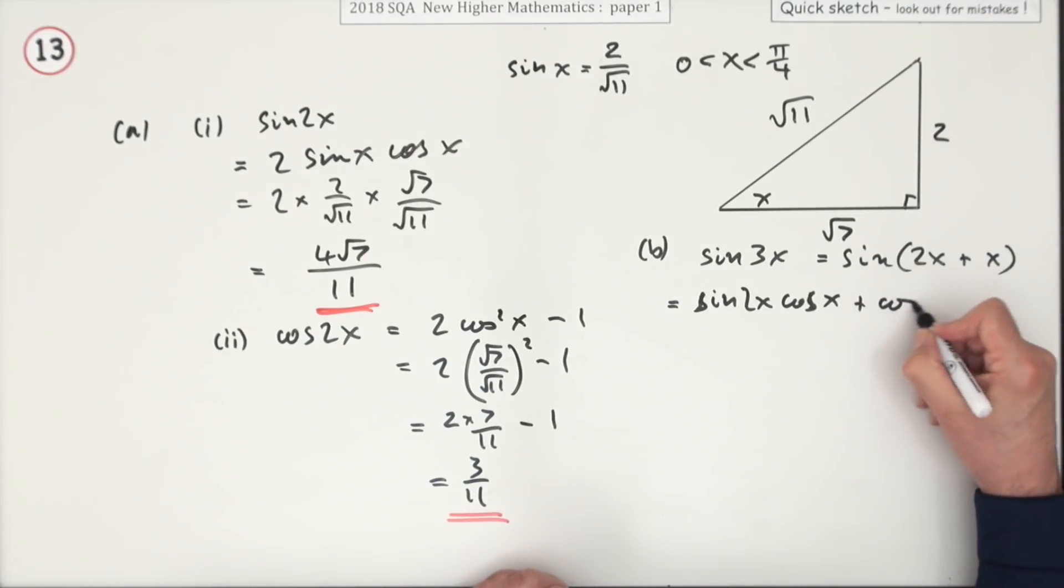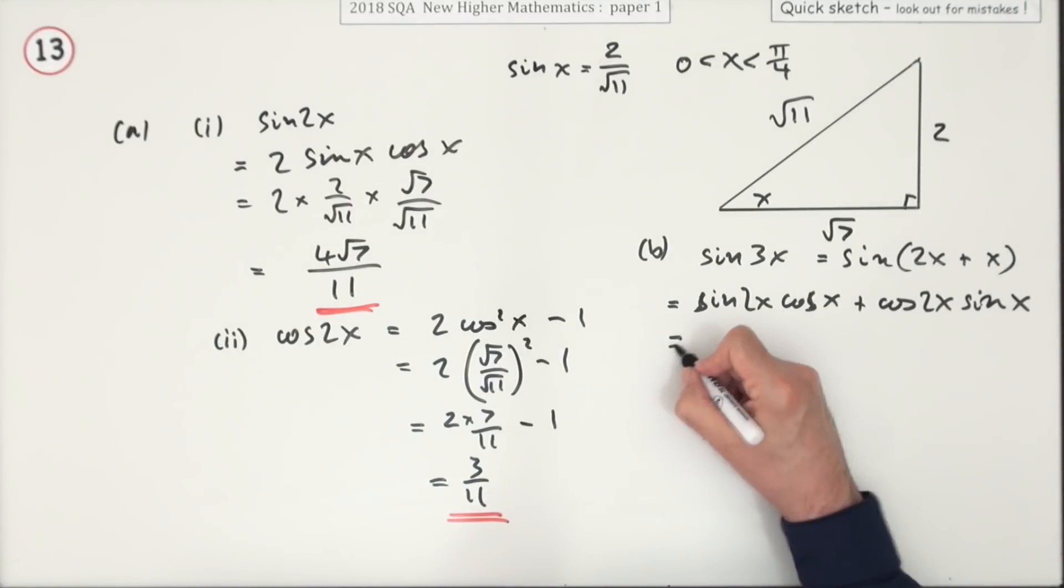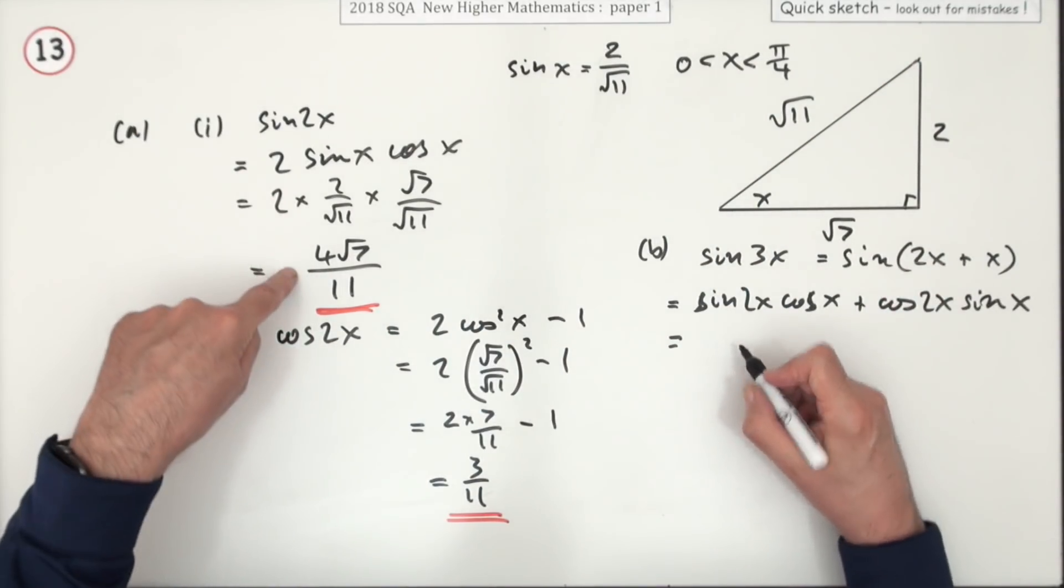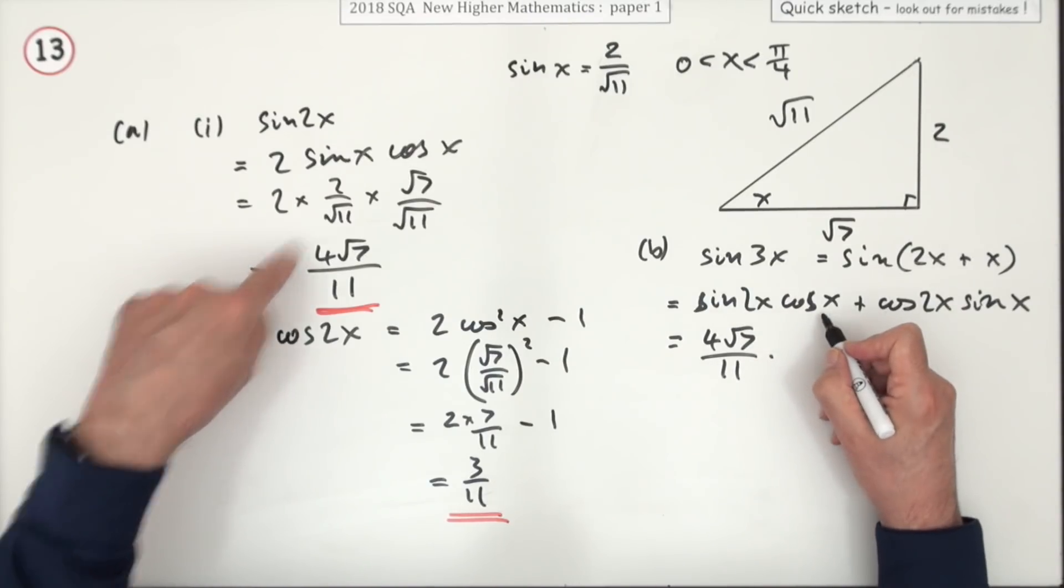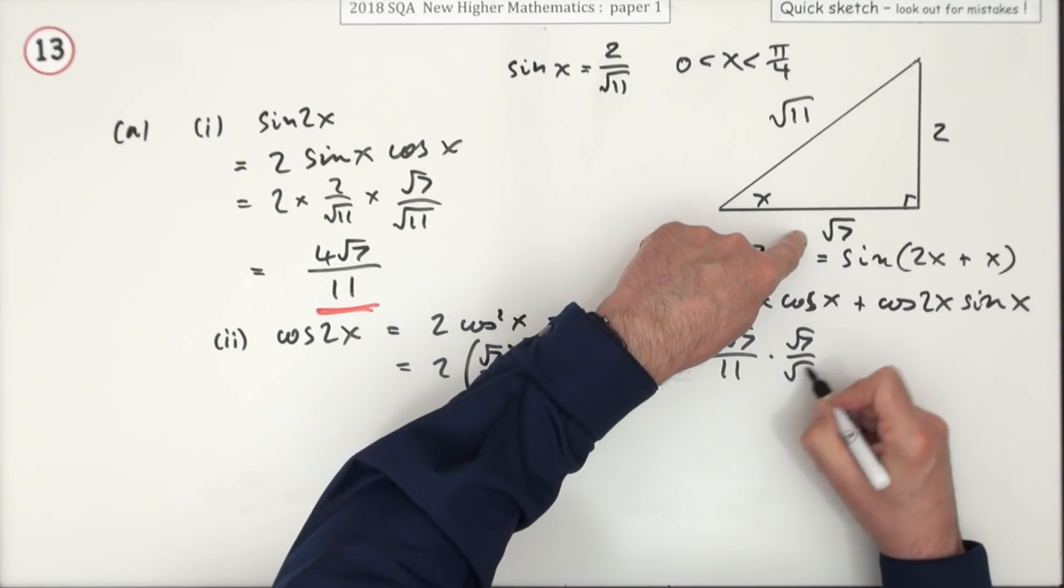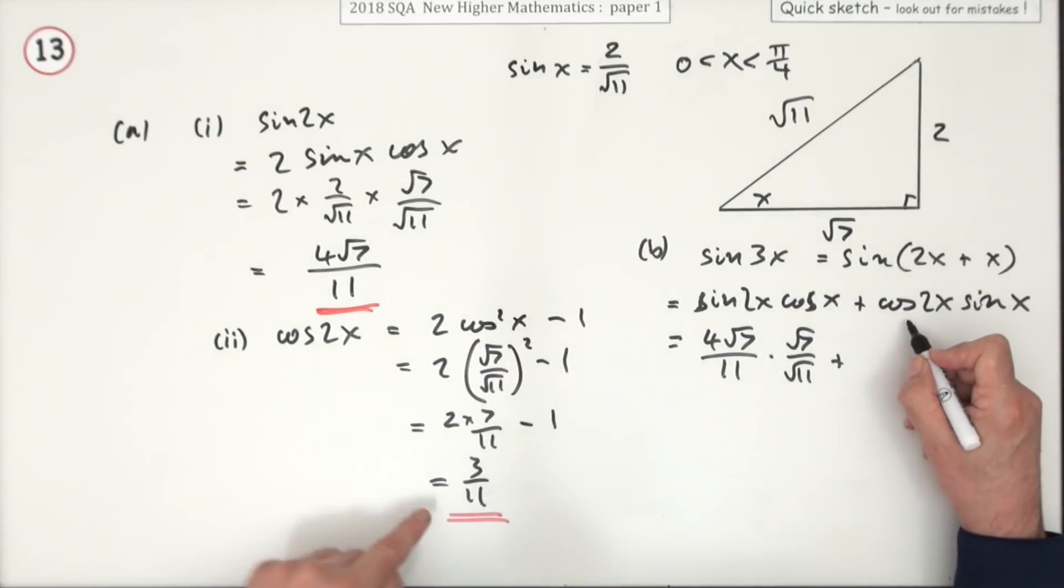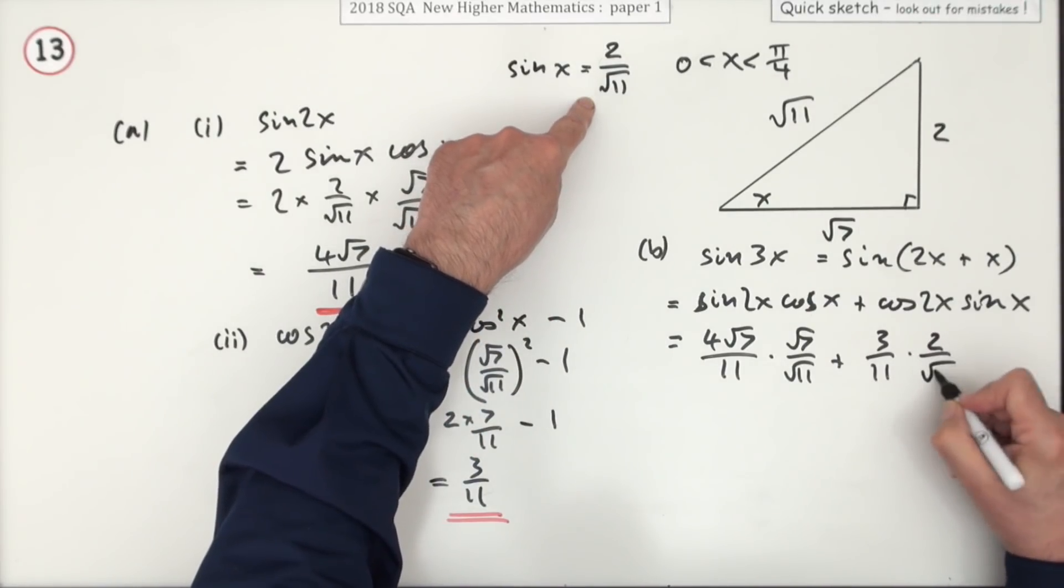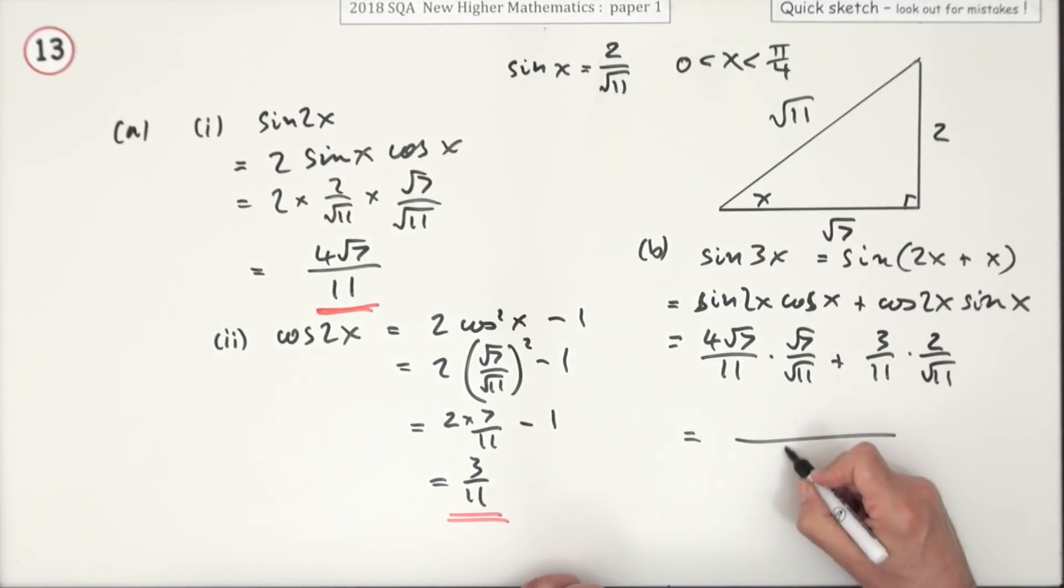So that'll be just looking at the front: sine 2x cos x—I know those parts—plus cos 2x sin x—I know those parts, they're all floating about here. So you just put them in. Sine 2x was 4 root 7 over 11, cos x was root 7 over root 11, cos 2x was 3 over 11, and sin x was to begin with 2 over root 11.